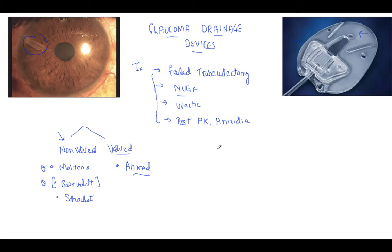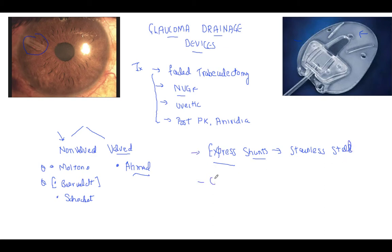Another important thing asked in the AIIMS exam: sometimes instead of tubes we use shunts. These shunts are almost like tubes but they are made up of metals like stainless steel. They are also used in surgery. The shunts you have to remember are CyPass and iStent. The new upcoming stent is the Zen implant.